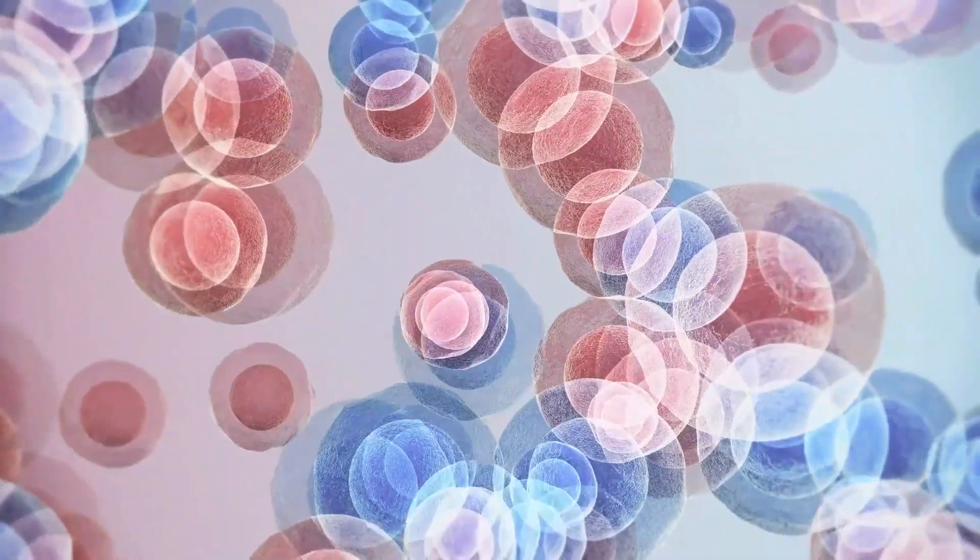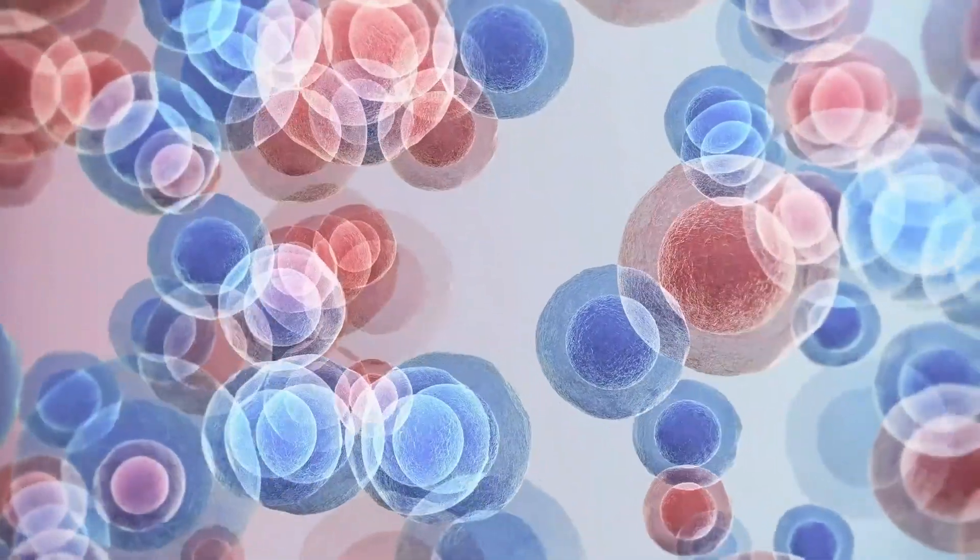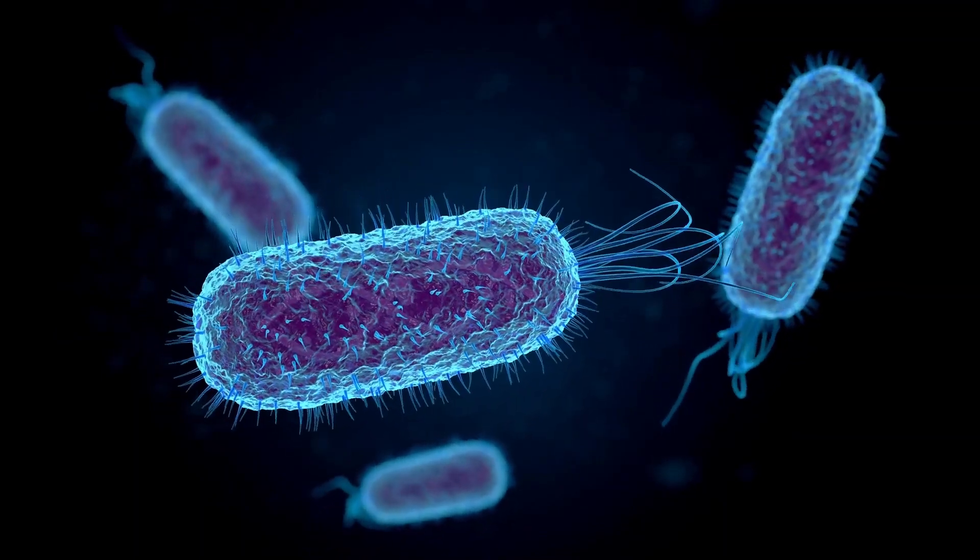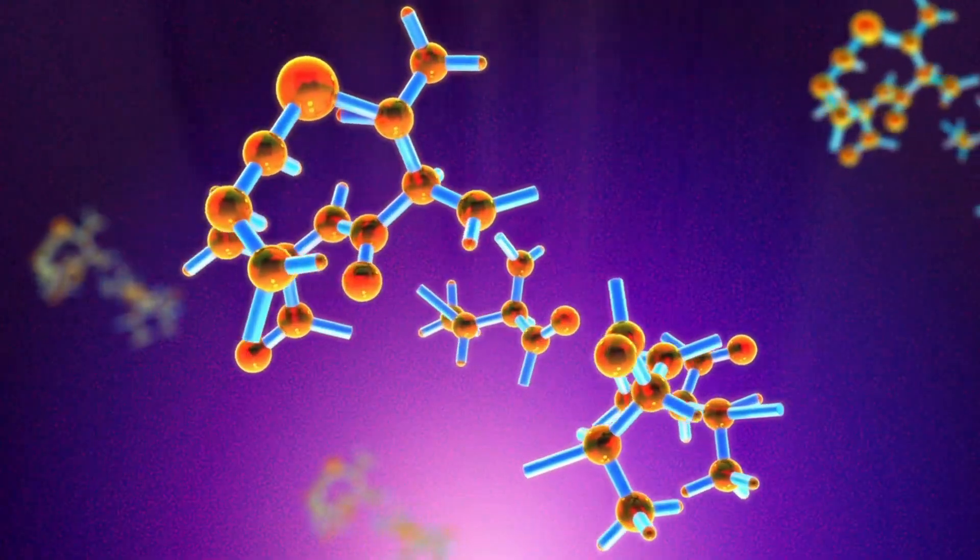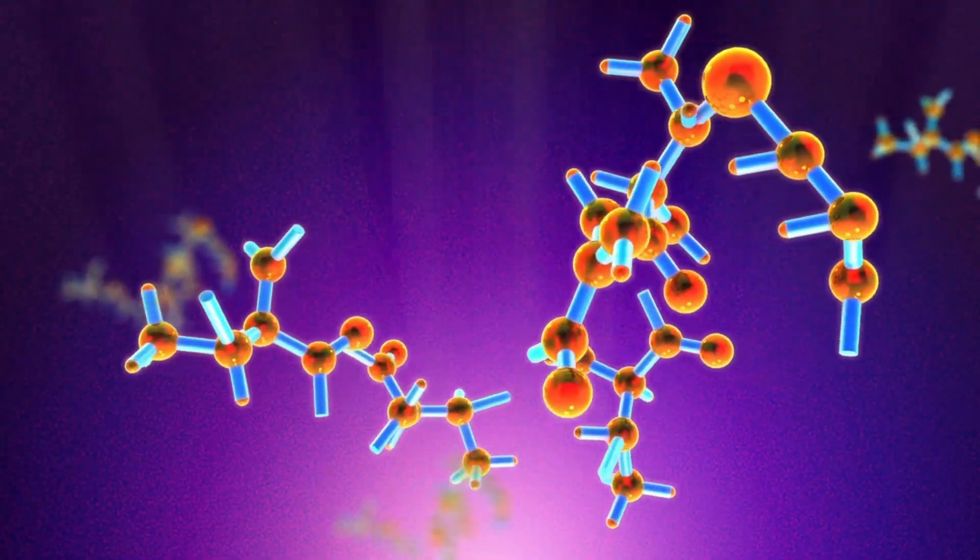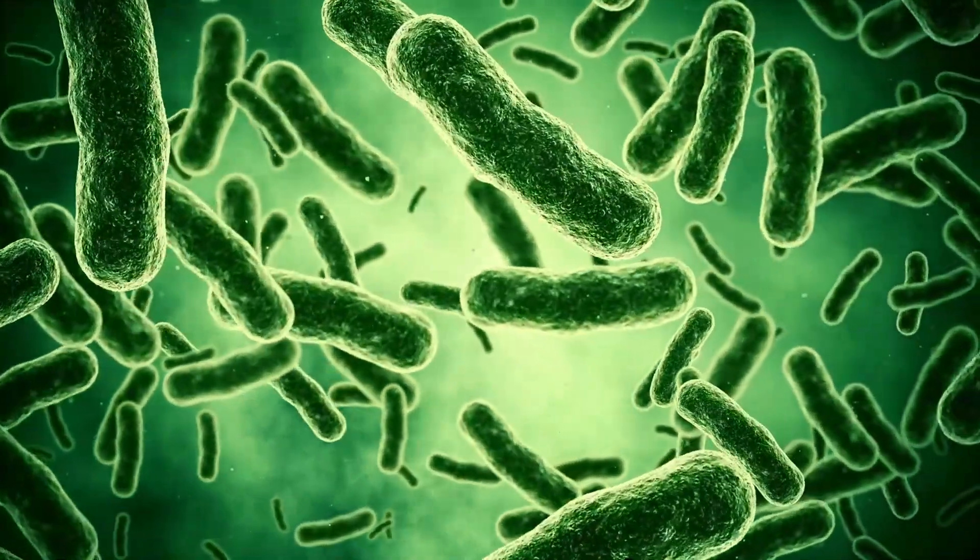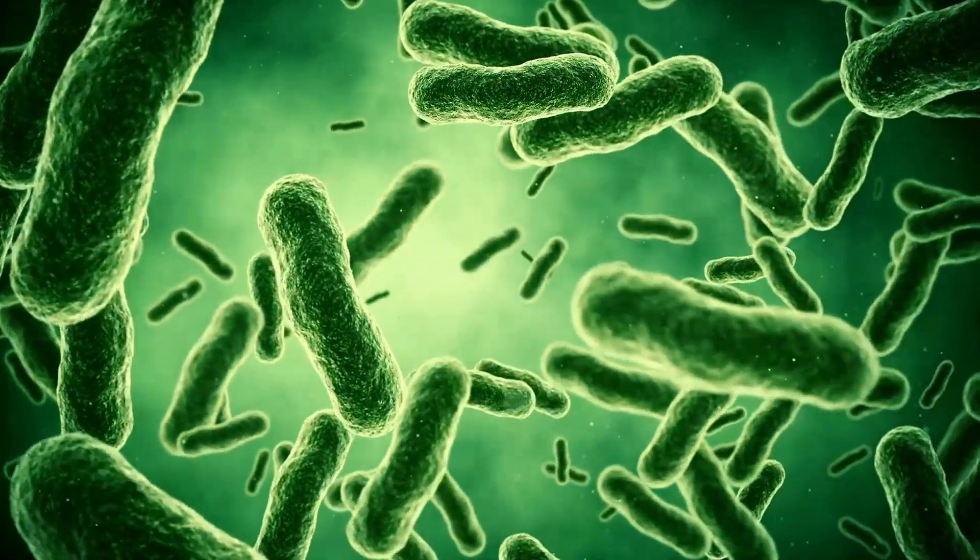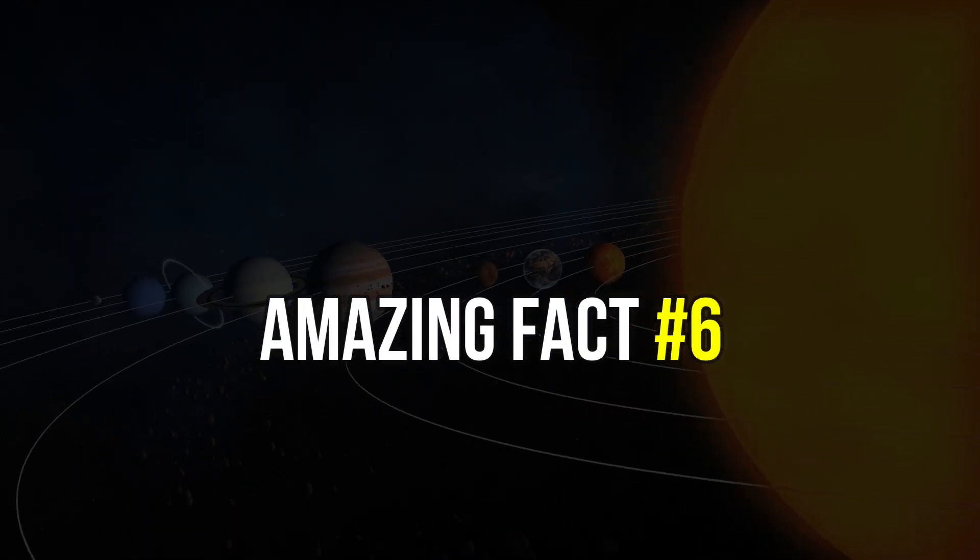However, some human cells, such as nerve cells and muscle cells, can be much longer. Despite their small size, bacterial cells are highly complex and can perform many of the same functions as human cells. They are capable of reproducing, synthesizing proteins, and interacting with their environment. The human body contains a diverse community of bacteria that live in and on various parts of the body, including the skin, nose, mouth, and gut. These bacteria play important roles in maintaining health and preventing illness, and they are generally harmless to humans.